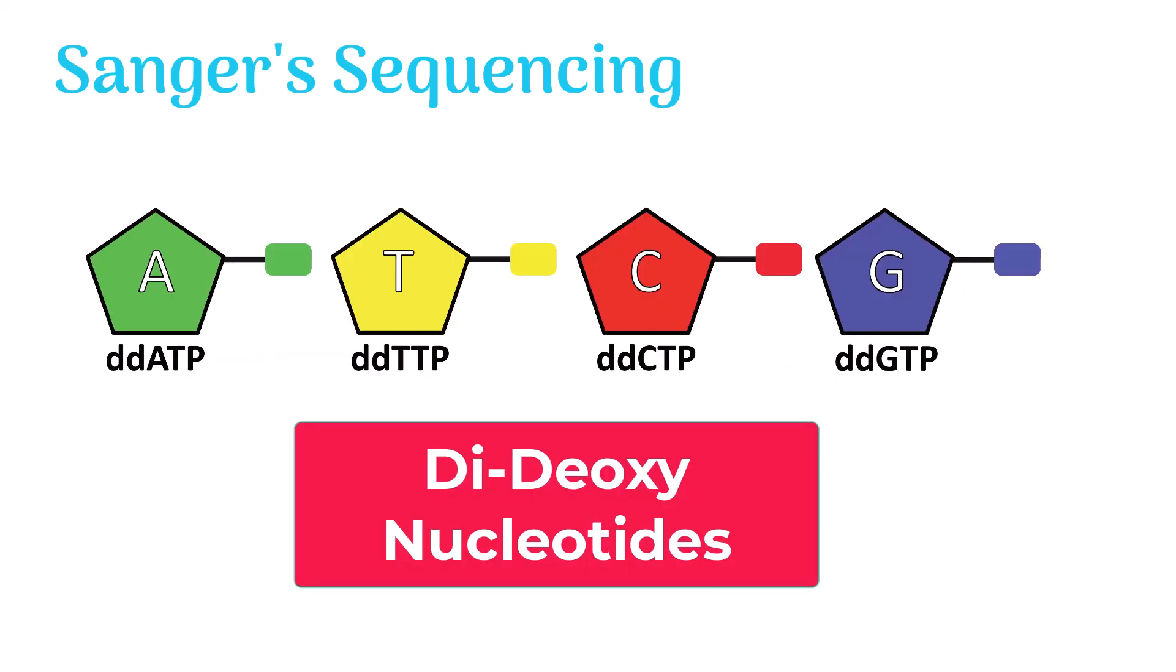Sanger used these dideoxynucleotides to terminate the DNA polymerization. Let's explore the Sanger sequencing method in a better way.